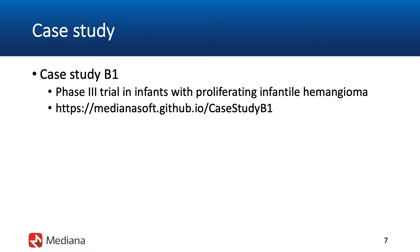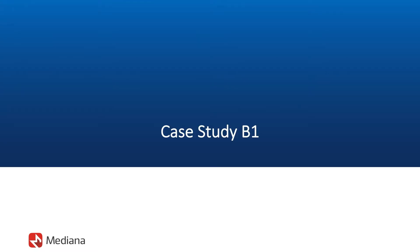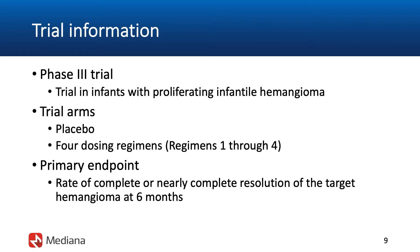We are now ready to look at Case Study B1, which was used in Part 7 to illustrate an adaptive approach to treatment selection in multi-stage clinical trials. This case study is based on a real-life Phase 3 trial conducted in infants with hemangiomas. The trial employed a multi-arm design with one placebo arm and four arms representing four dosing regimens of the investigational therapy.